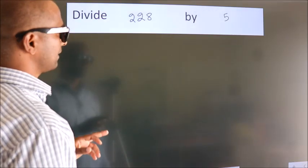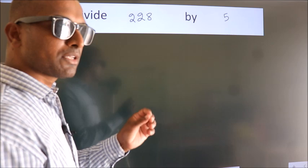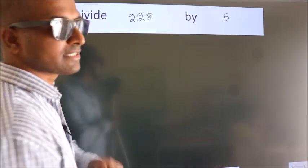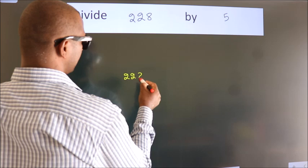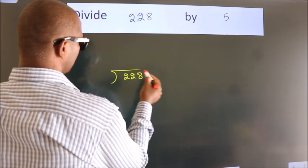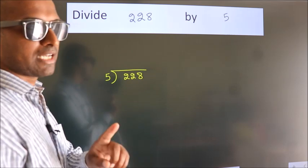Divide 228 by 5. To do this division, we should frame it in this way. 228 here, 5 here. This is your step 1.